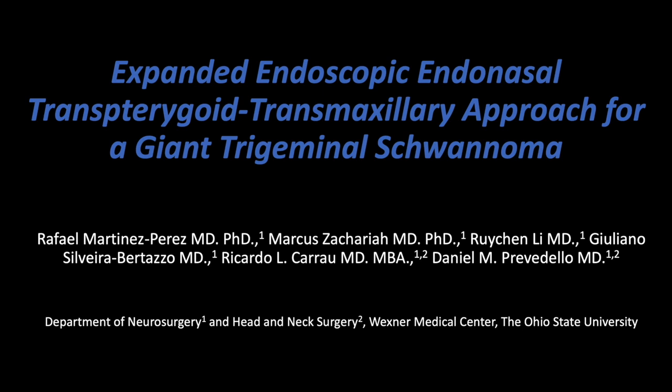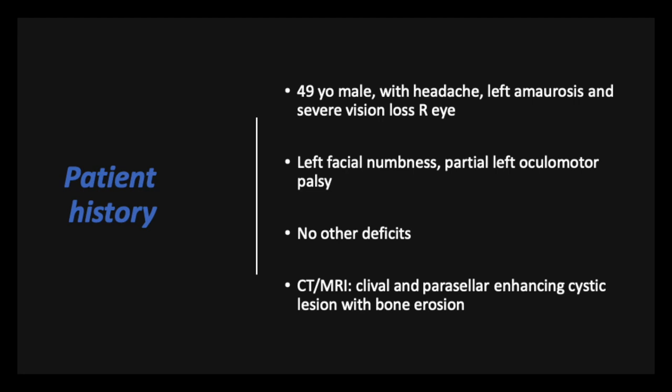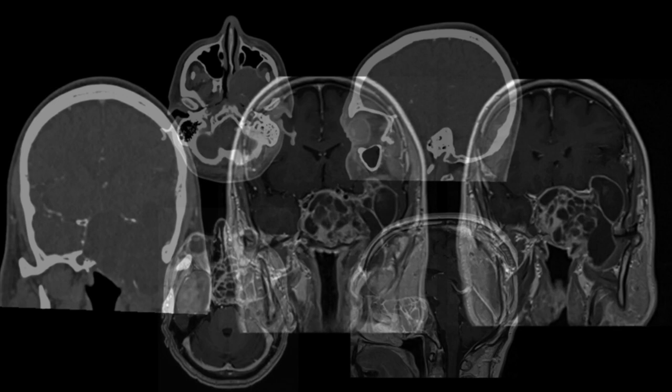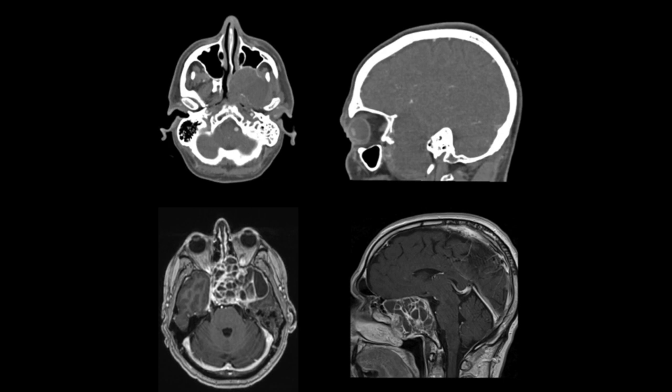This video represents an expanded endoscopic endonasal transpterygoid and transmaxillary approach for resection of a giant trigeminal schwannoma. The patient was a 49-year-old gentleman who presented with a one-year history of vision loss on the left side and progressive deterioration of his vision on the right side. He also had numbness on the left side of the face. Head CT and MRI showed a large lesion occupying the sphenoid, the clivus, the temporal fossa, and the infratemporal fossa with expansion into the sinonasal cavity and proptosis.